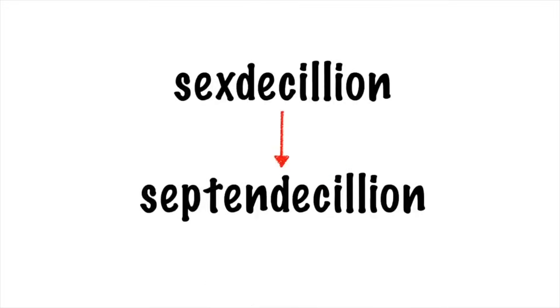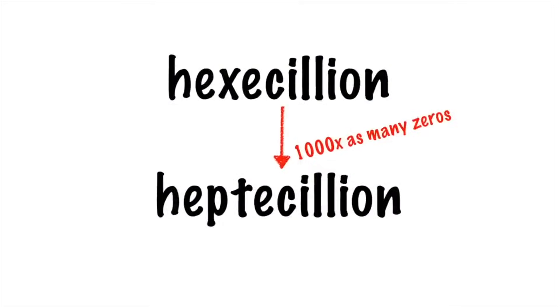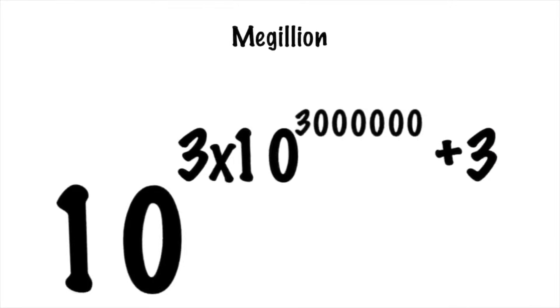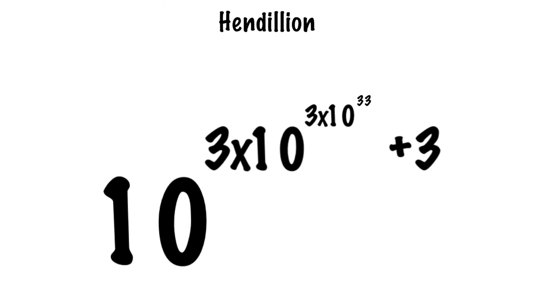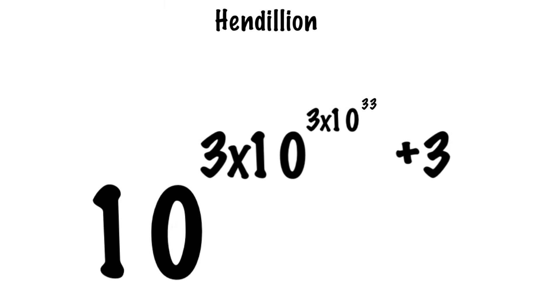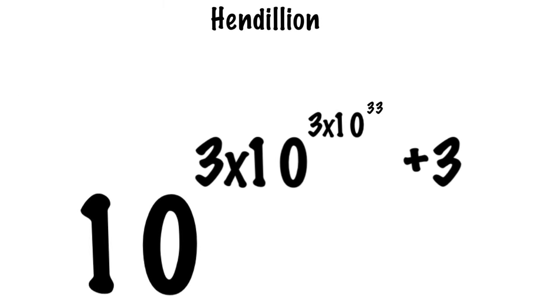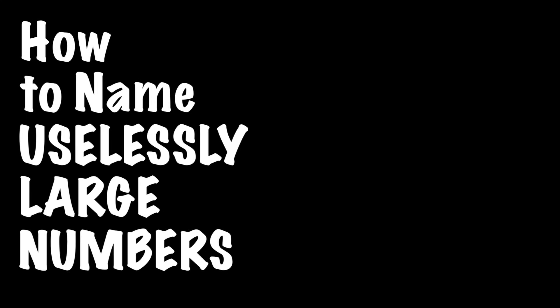Over the course of part one of 'How to Name Uselessly Large Numbers,' we worked our way up to one kectillion. And by the end of part two, we had worked ourselves up to one hendillion. But even this, as massive as this number is, is child's play compared to what we will reach by the end of this video. How to Name Uselessly Large Numbers, part three.